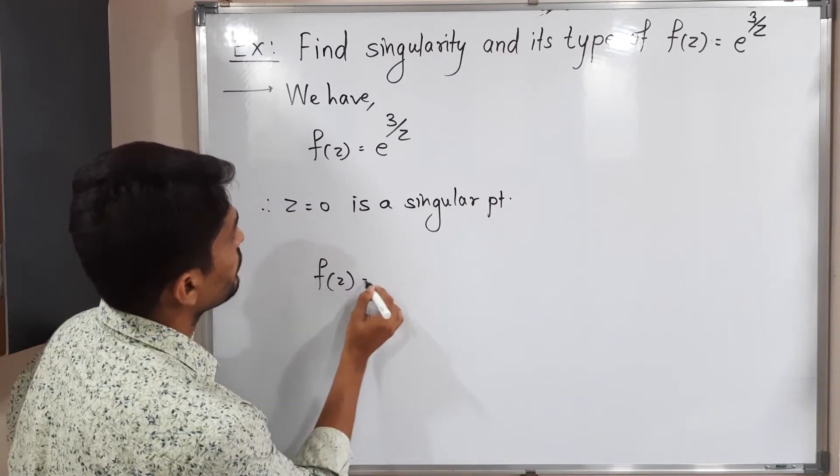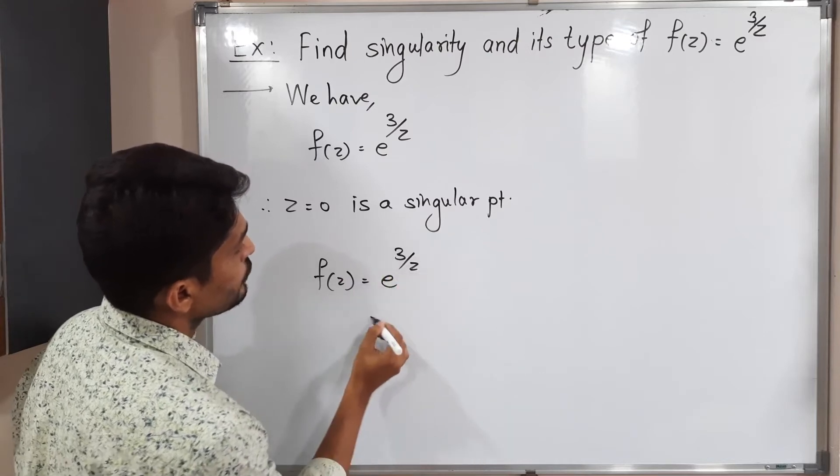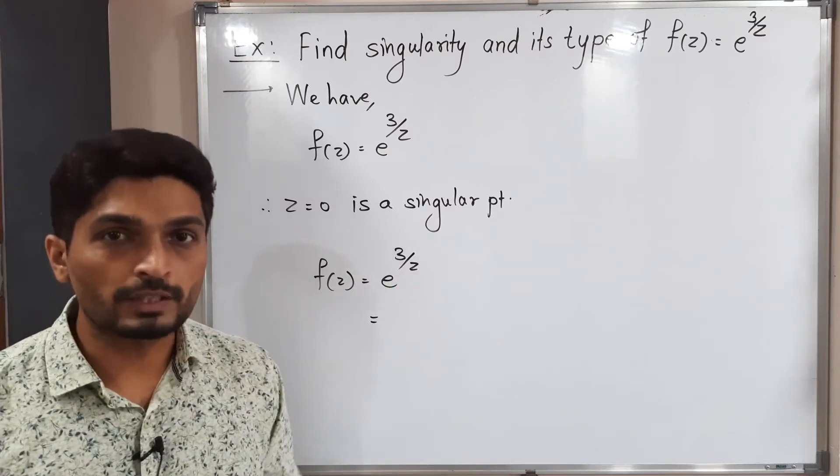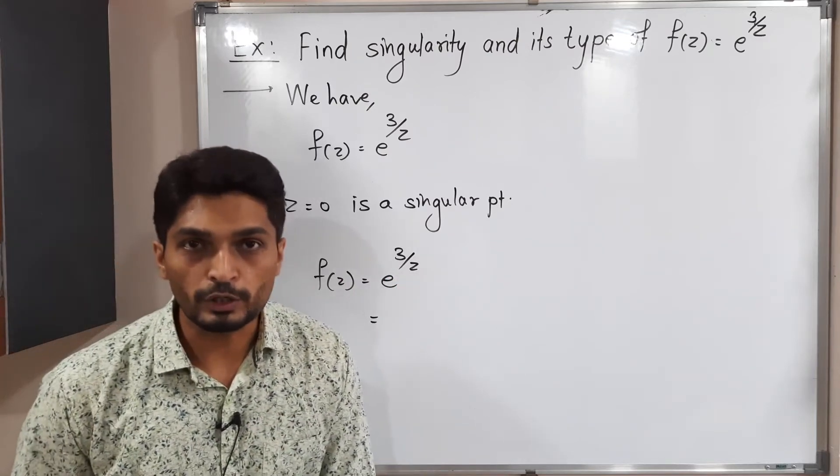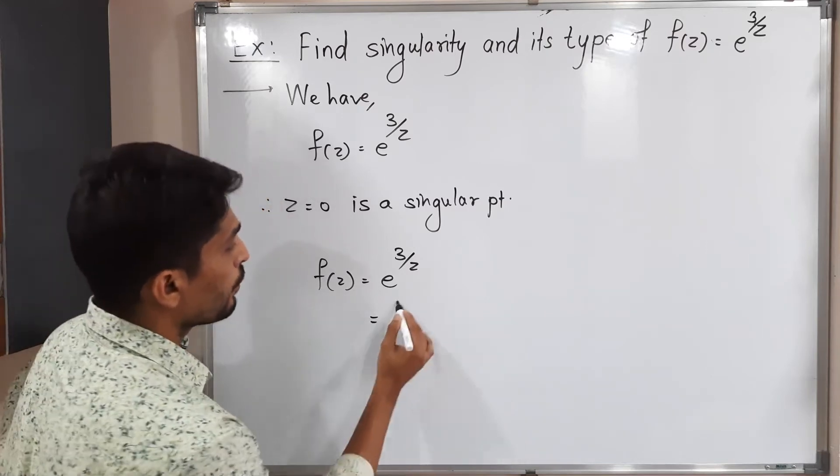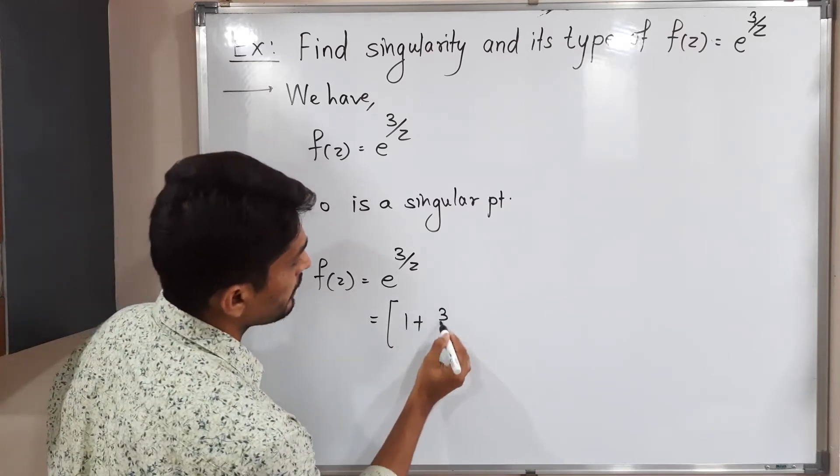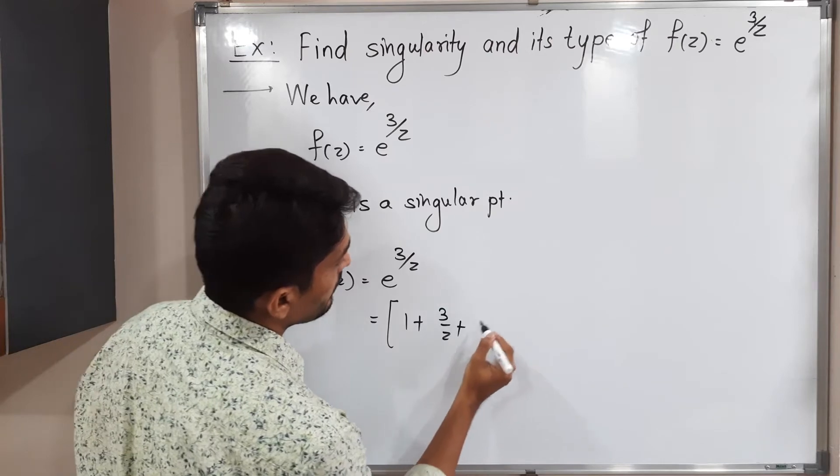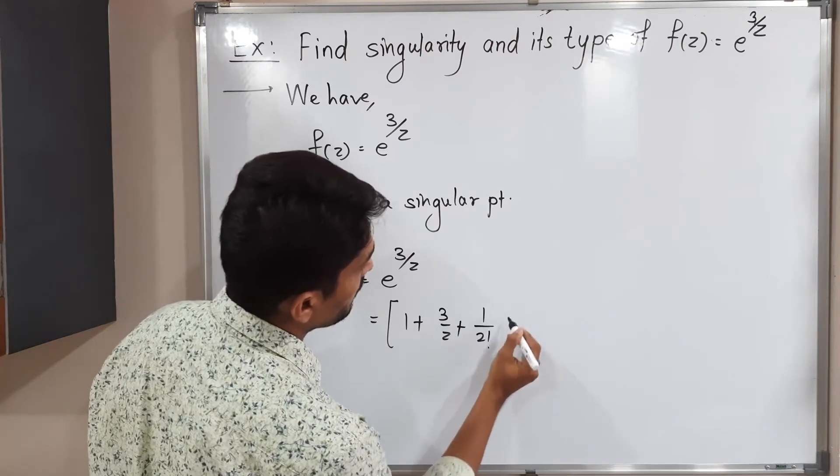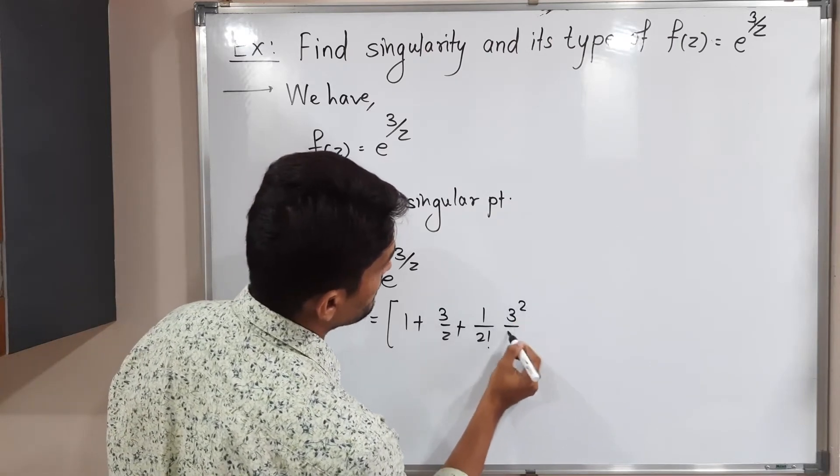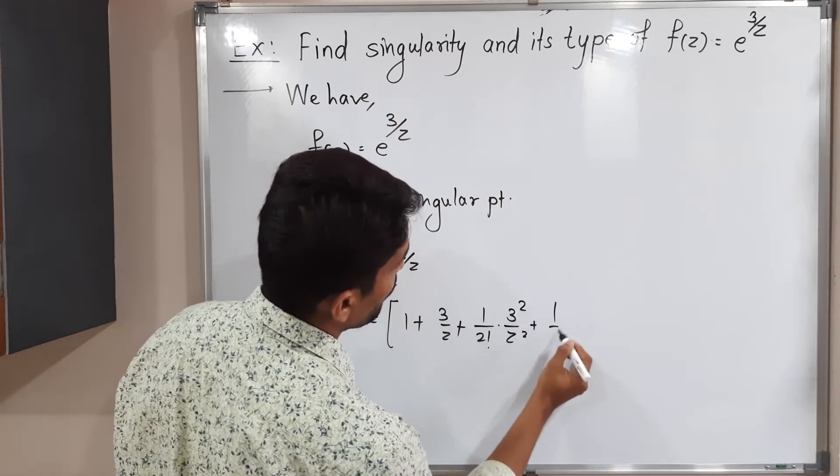So f(z) = e^(3/z). All of you are familiar with the series of e^z. I am going to use the same series: 1 + 3/z + (1/2!)(3²/z²) + (1/3!)(3³/z³) + ...